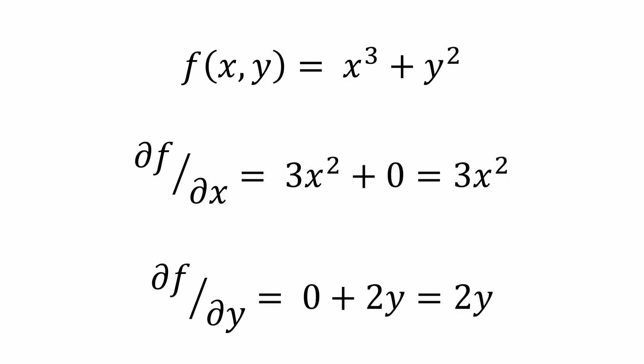Same thing you can do with y. The partial derivative of function f with respect to y is you are making x³ zero and finding the derivative of y², which is 2y, and that's your partial derivative. Super easy. Nothing complicated here.